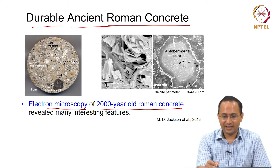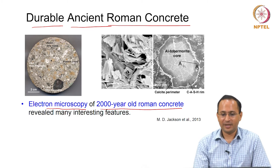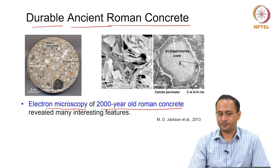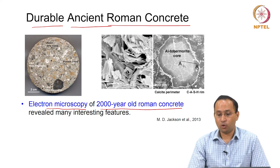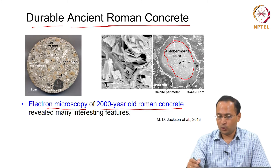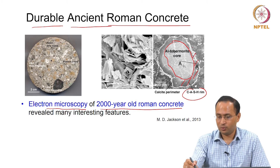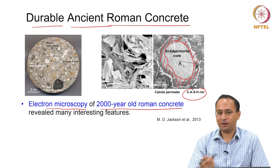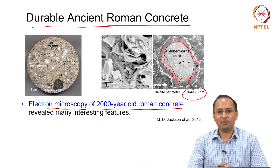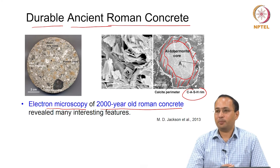Electron microscopy can tell us what kind of phases are formed in a material. They found the presence of aluminum tobermorite in the Roman concrete. We can see different phases: the core has Al-tobermorite surrounded by a C-A-S-H rim — calcium alumino silicate hydrate — which we usually see when we have OPC with supplementary cementitious materials. These kinds of insights can be gained by using electron microscopy.